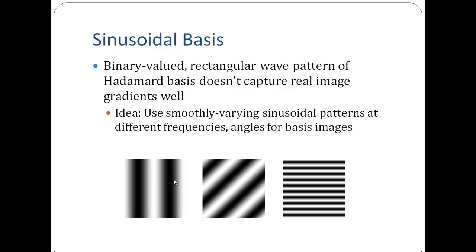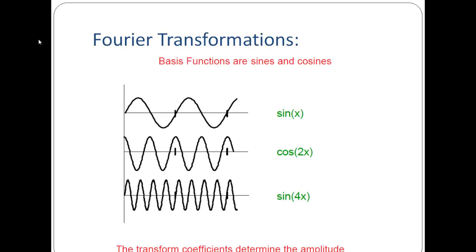Now, binary-valued rectangular wave patterns of Hadamard bases don't actually capture the real image gradients very well. So the idea behind using sinusoidal bases is to use smoothly varying sinusoidal patterns with different frequencies and angles for basis images. So this is the concept behind the Fourier transforms, wherein my basis functions are basically the sines and cosines. So I have a sine wave, which is like this. I have cosine waves. And the transformation coefficients determine the amplitude.